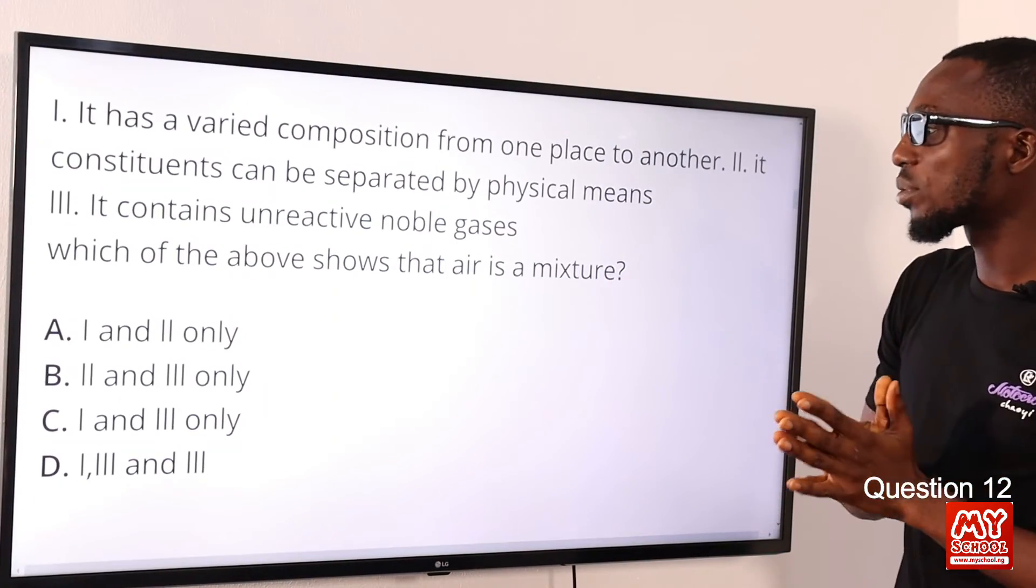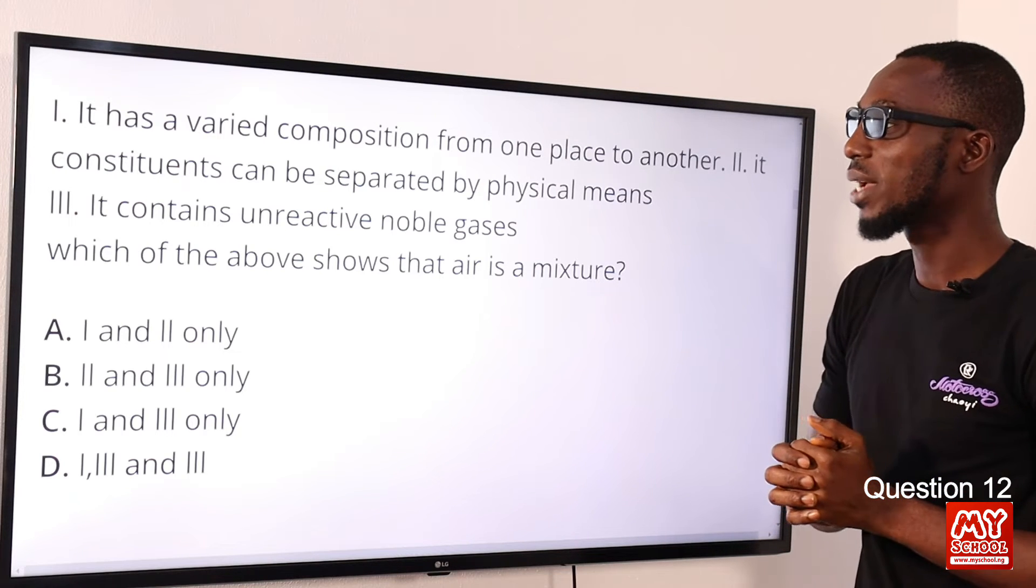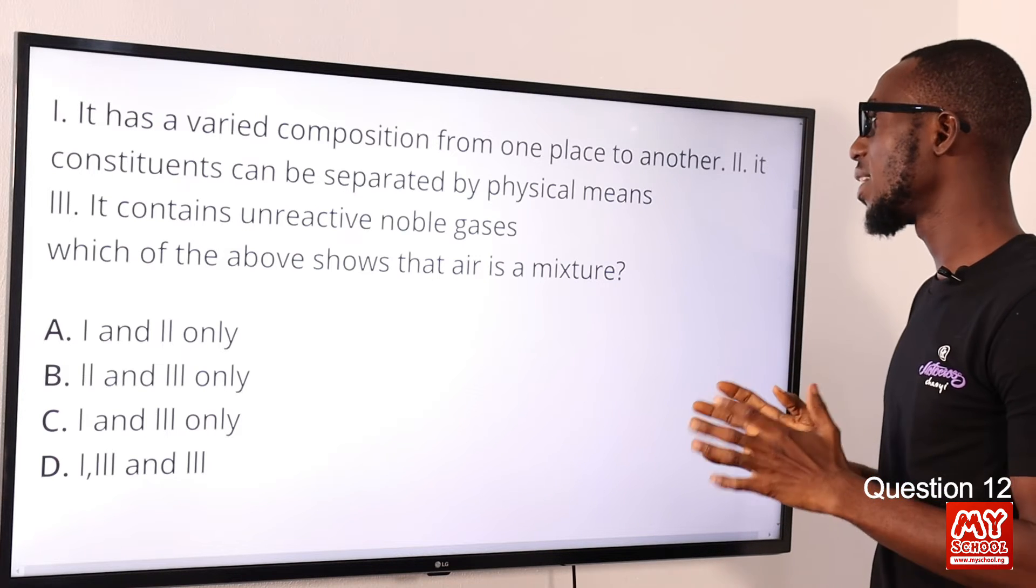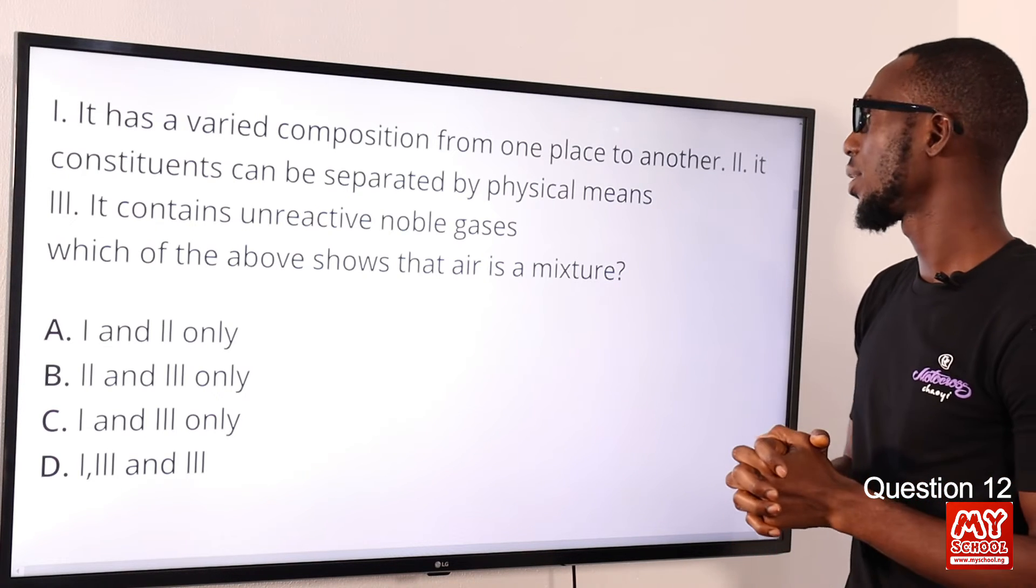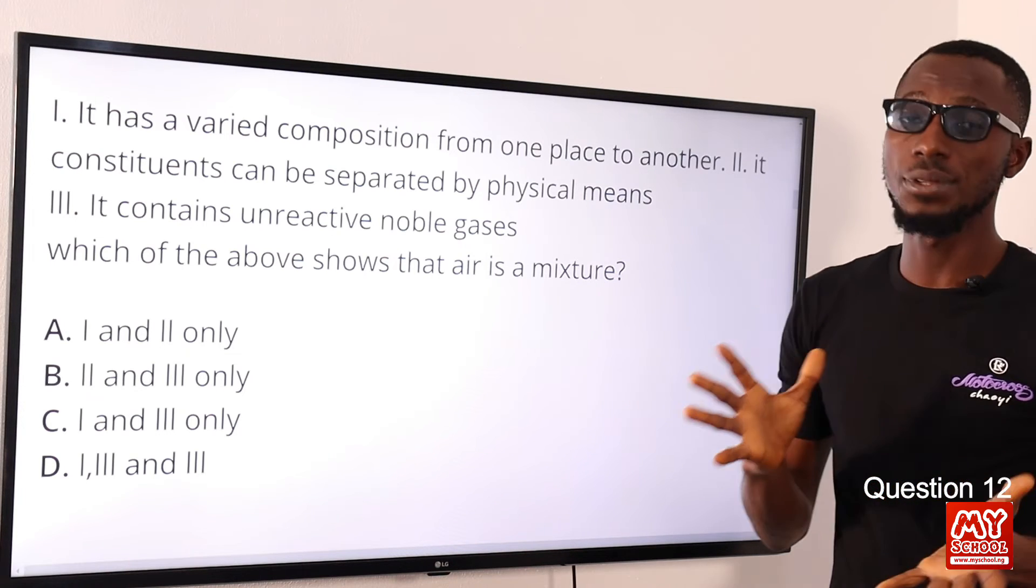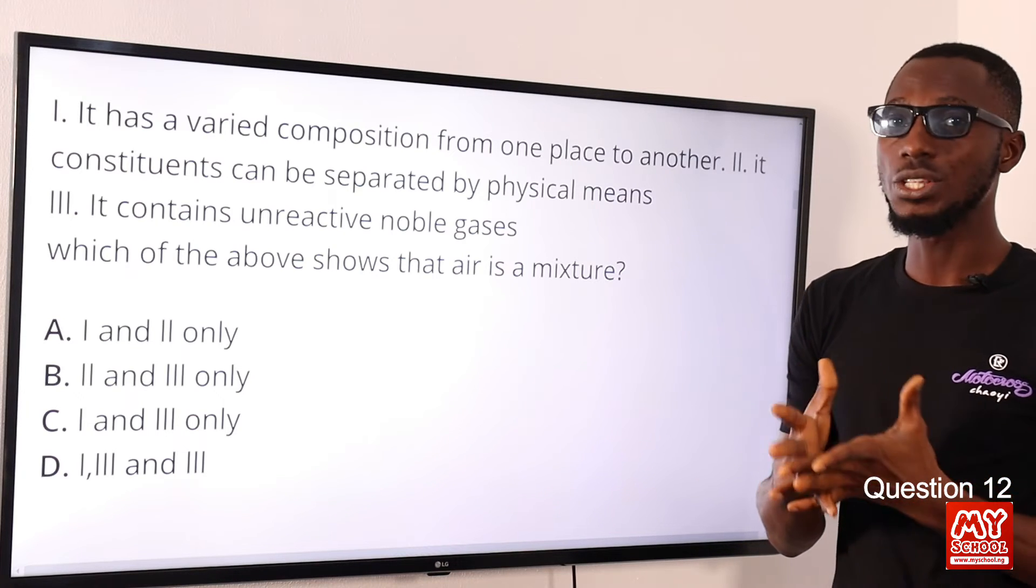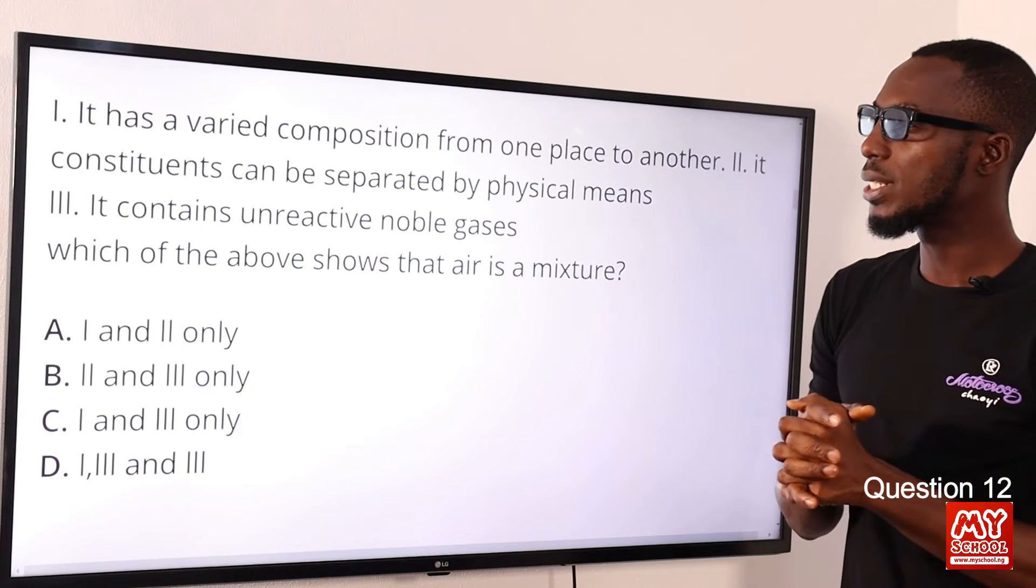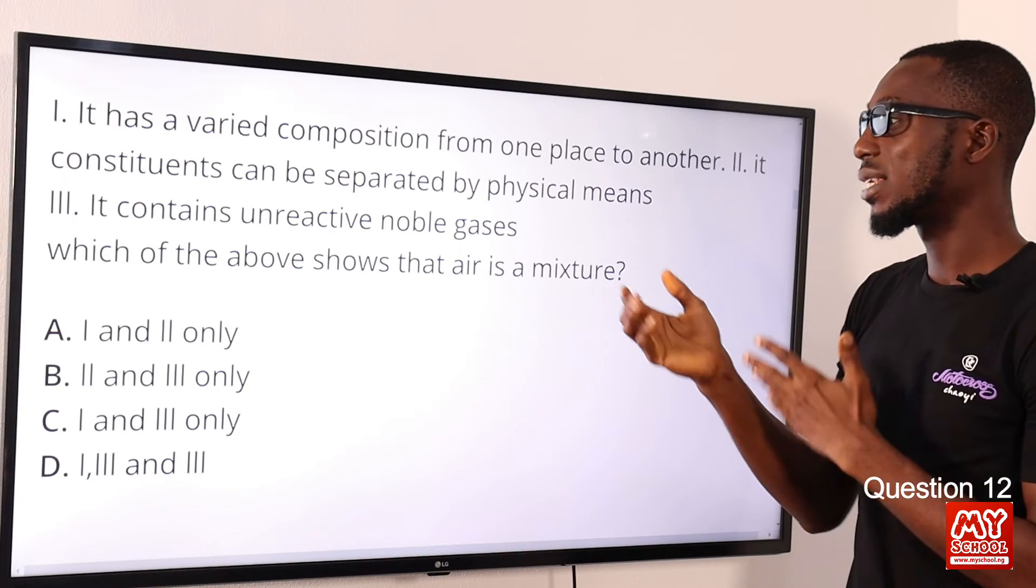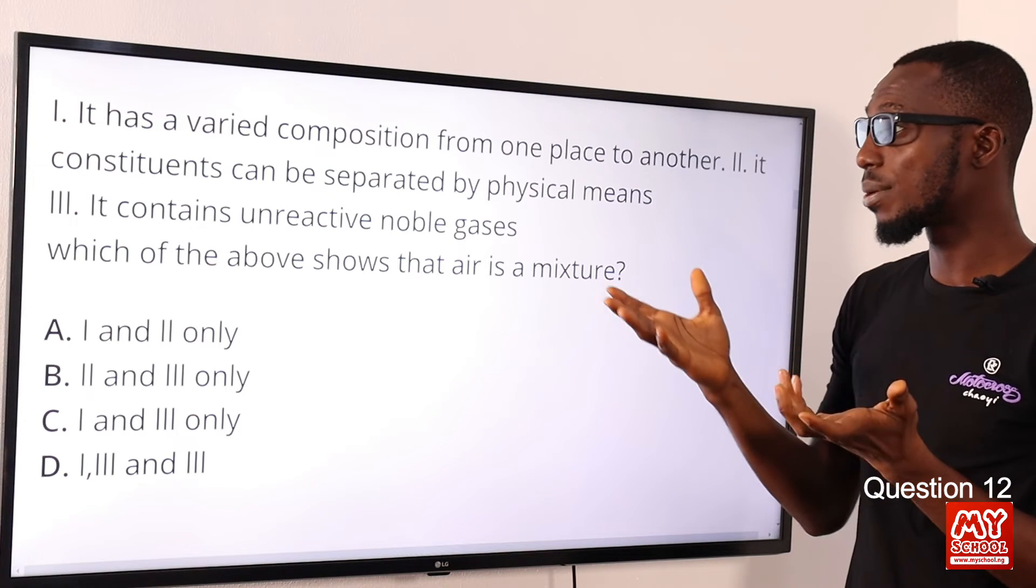Question 12: Which of the above shows that air is a mixture? Let's look at statement one: it has a varied composition from one place to another—that is of course correct. Statement two: its constituents can be separated by physical methods or physical means—that is of course correct because air is a mixture and you remember properties of mixture.